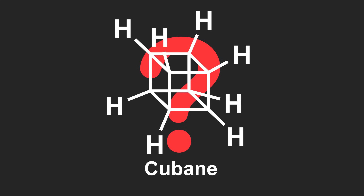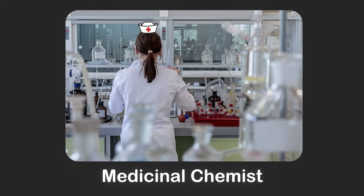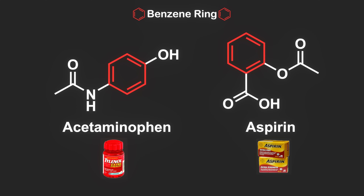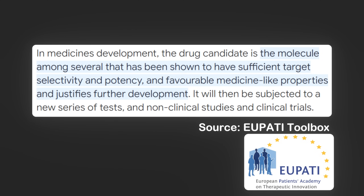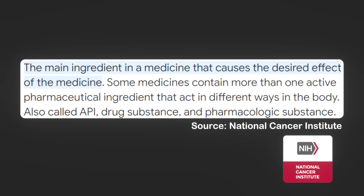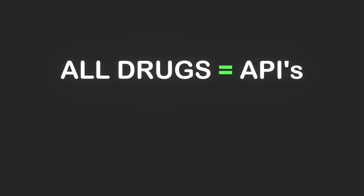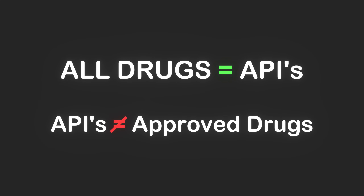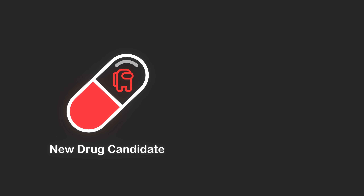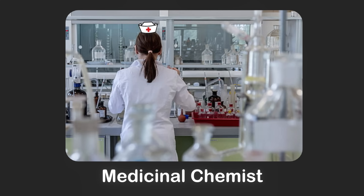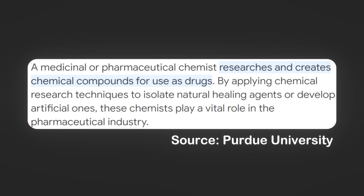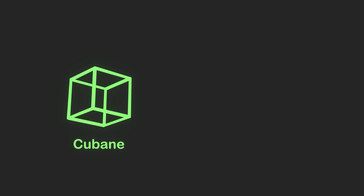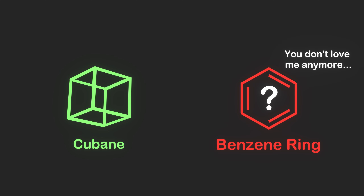So what is cubane and why should you care? Cubane is a cube-shaped molecule, and while you might think it's just a pretty-looking molecule with no practical uses, it's actually a fancy building block that medicinal chemists want to use as a substitute for benzene rings in new drug candidates. Drug candidates are often referred to as APIs, which stands for active pharmaceutical ingredients, distinct from but inclusive of approved drugs. A new drug candidate is an API which still needs to achieve FDA approval before it can be marketed.